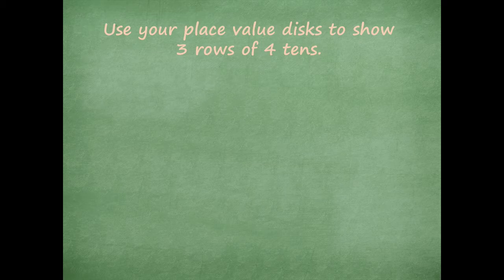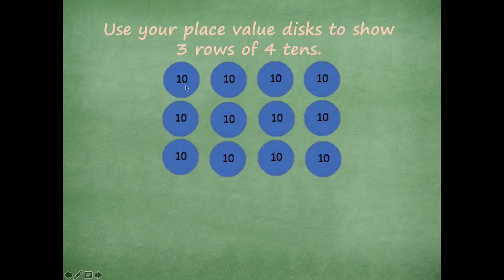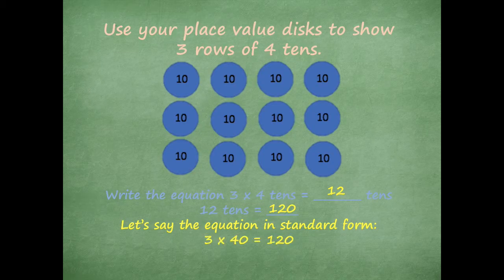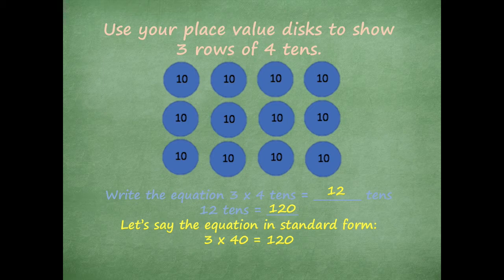Now use your place value disk to show three rows of four tens. Go ahead and pause the video and do that. If you don't have place value disks, draw the circles with a ten inside each one. Here's what I came up with: my first row of four tens, my second row of four tens, and my third row of four tens. The equation is three times four tens equals blank tens — twelve tens. Twelve tens equals 120, so in standard form: three times forty equals 120, because four tens in each row is forty.